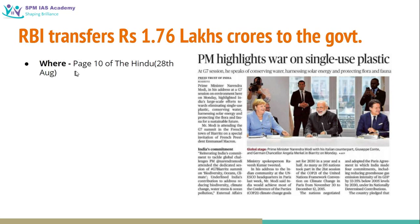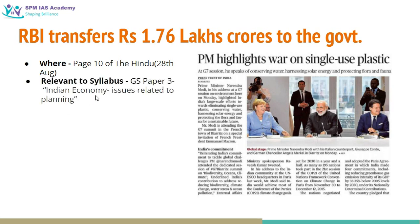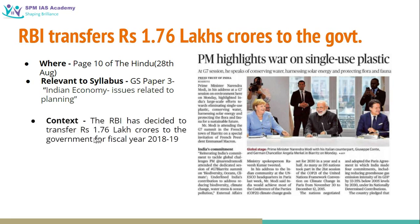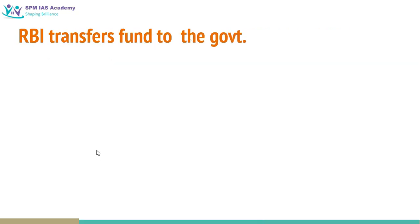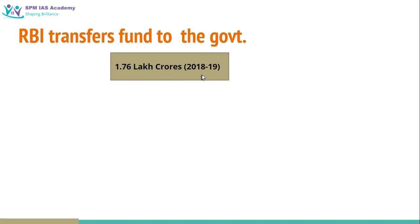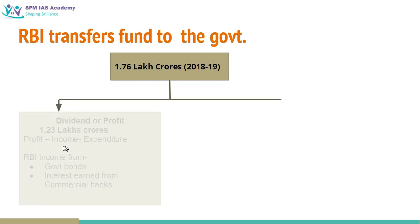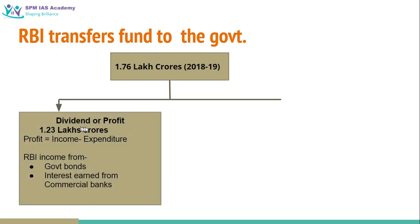The next article is about RBI transferring rupees 1.7 lakh crore to the government. It came on page 10 of The Hindu on 28th August. It is relevant to the syllabus from GS paper 3 Indian economy and issues related to planning. The RBI has decided to transfer rupees 1.76 lakh crore to the government for fiscal year 2018-19. This will be transferred as dividend or profit under two headings.